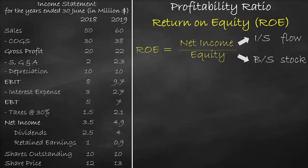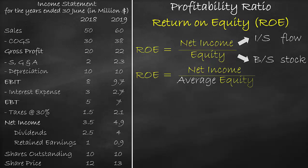So we can rewrite the return on equity, or ROE, as net income divided by the average equity.